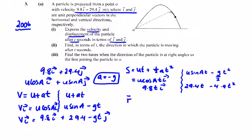So my displacement vector, which we write in terms of r: 9.8t in the i direction plus, in brackets, 29.4t minus 4.9t squared in the j direction.